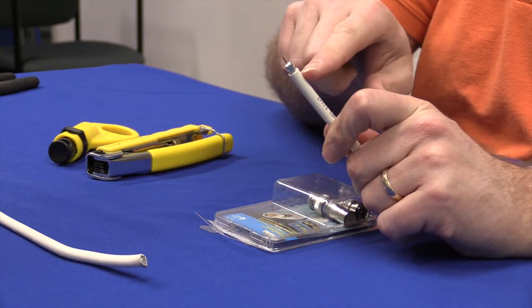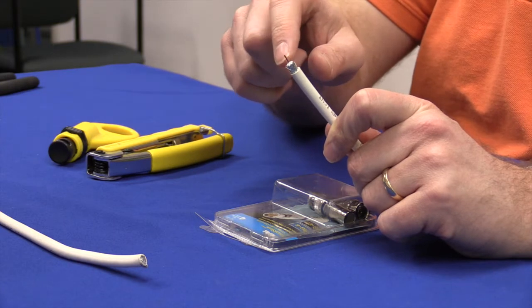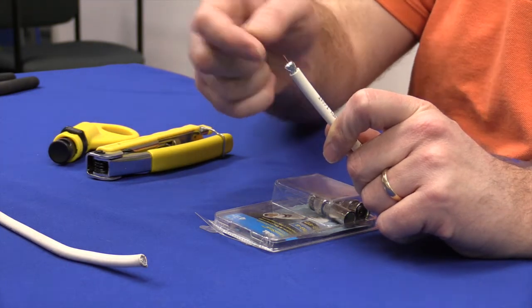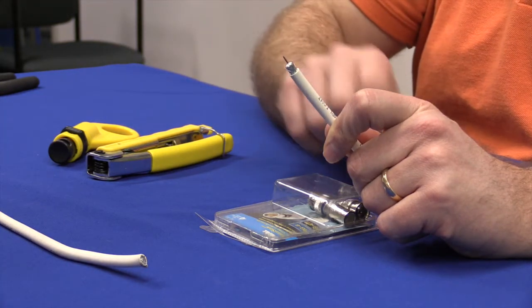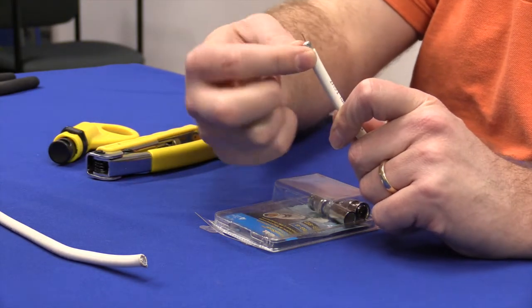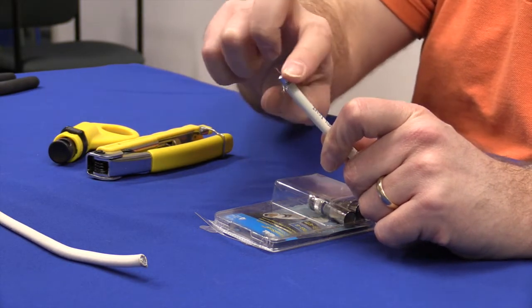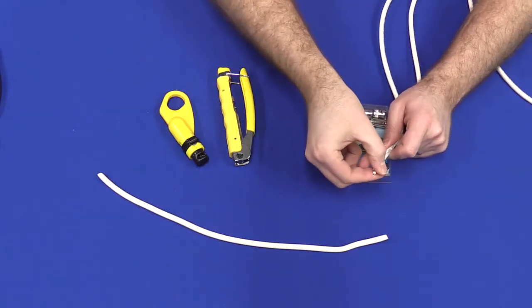It's stripped the outer plastic casing, and now it has stripped the inner casing, and you can see the center copper wire. The next thing you need to do is fold back the silver strings or wires. Make sure that they are not in the way.